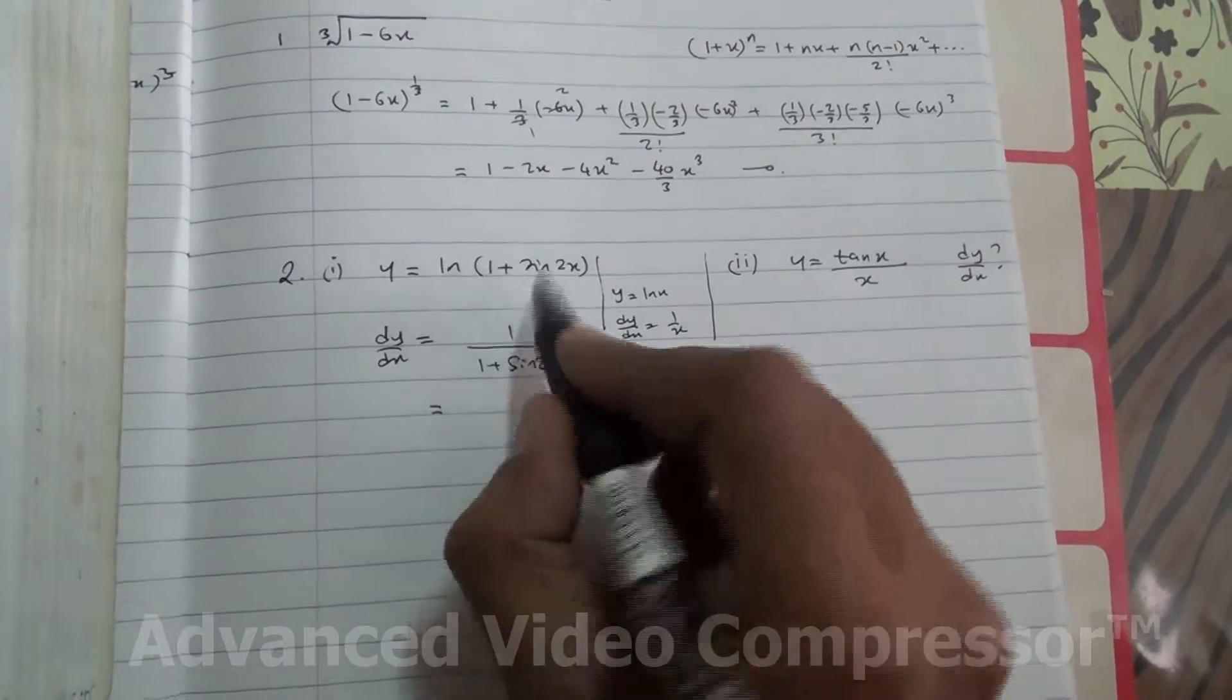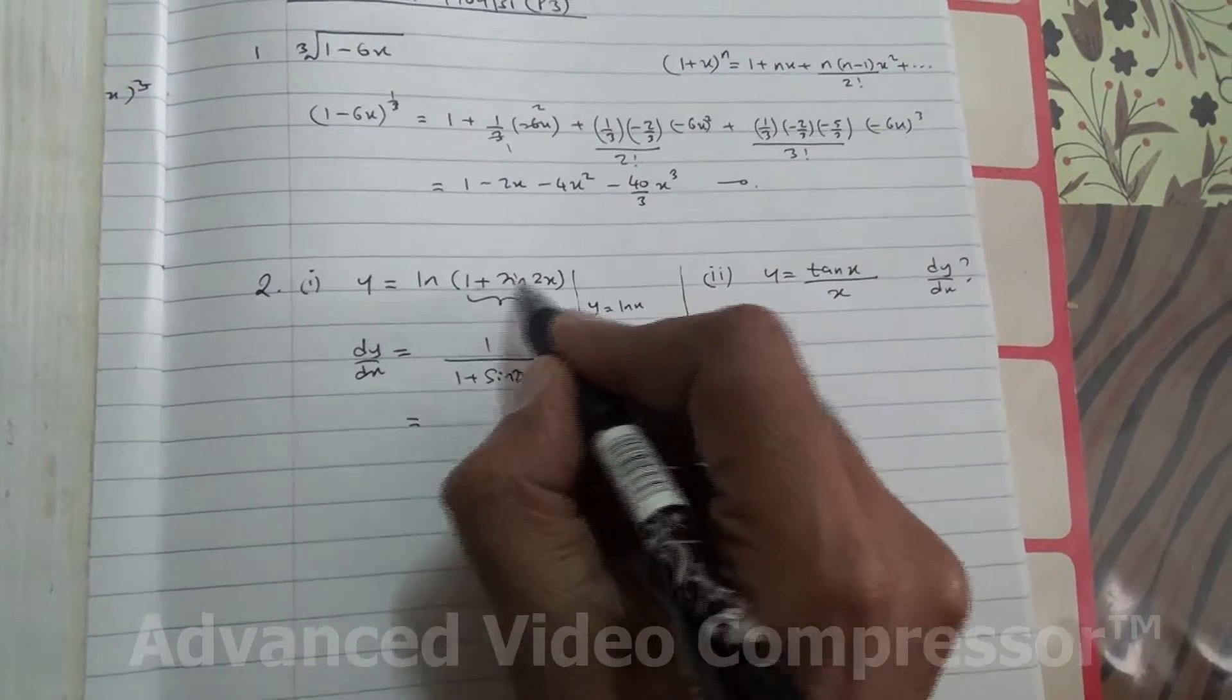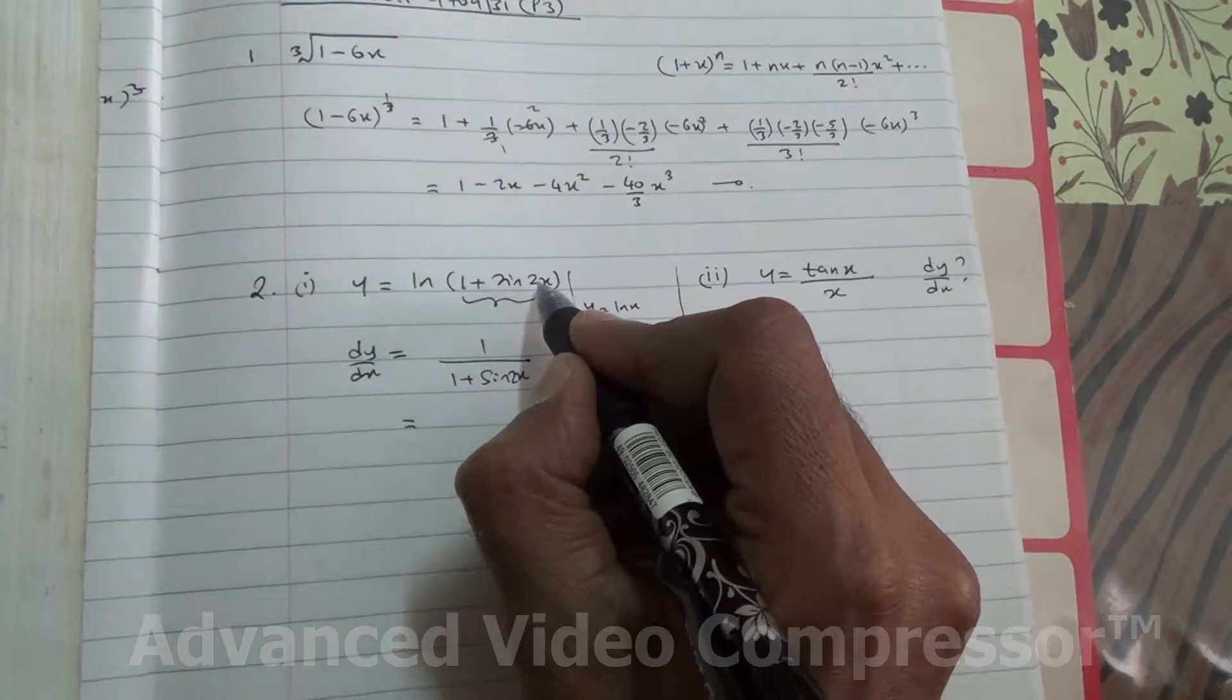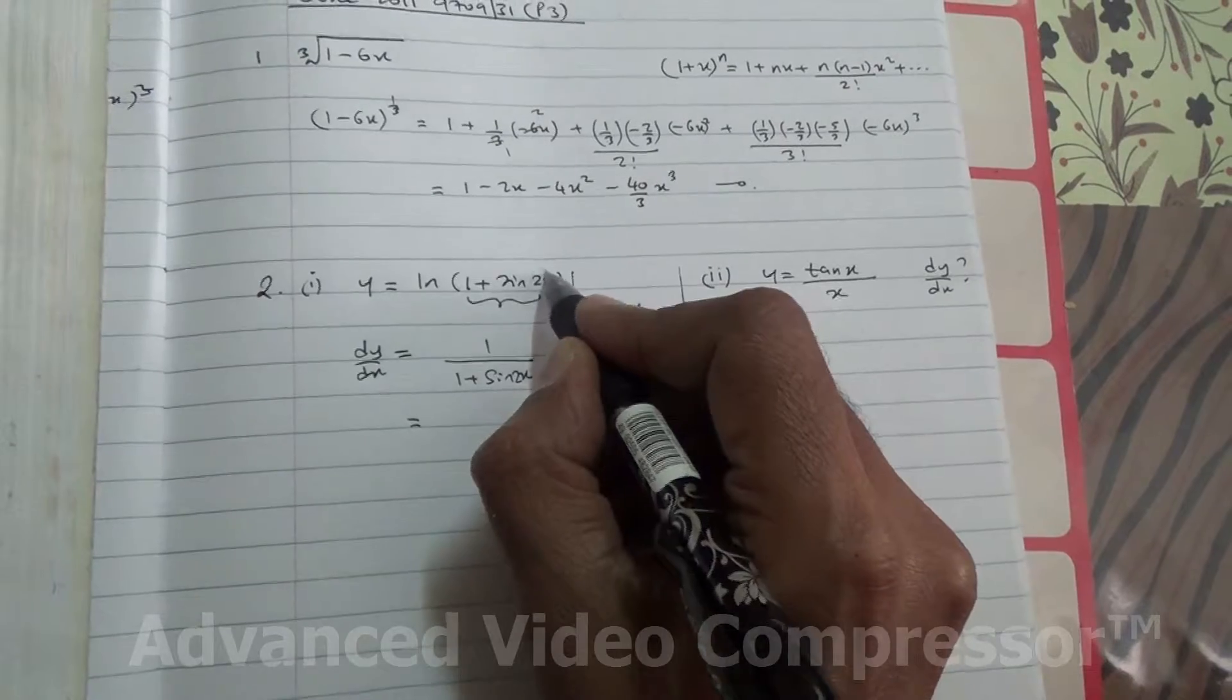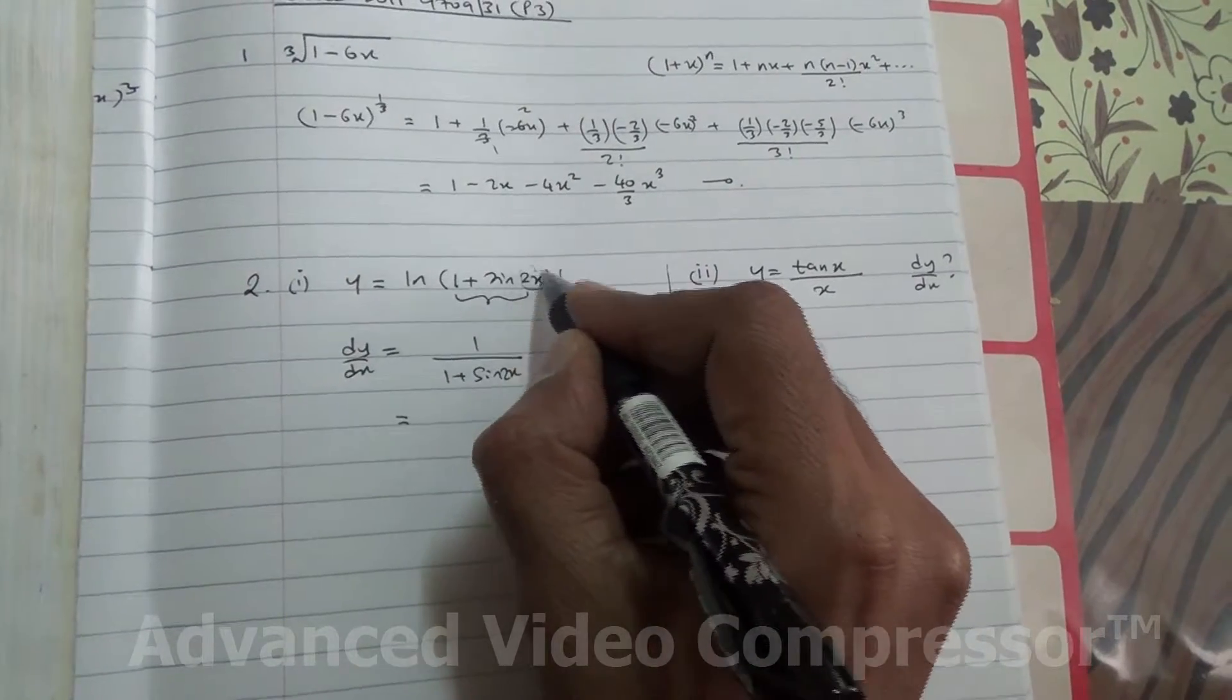However, we have a core inside which we need to differentiate as well. When you differentiate 1, you're going to get 0. You differentiate sin 2x, you're going to get cos of 2x, but multiply by 2 as well, because you need to differentiate the 2x.